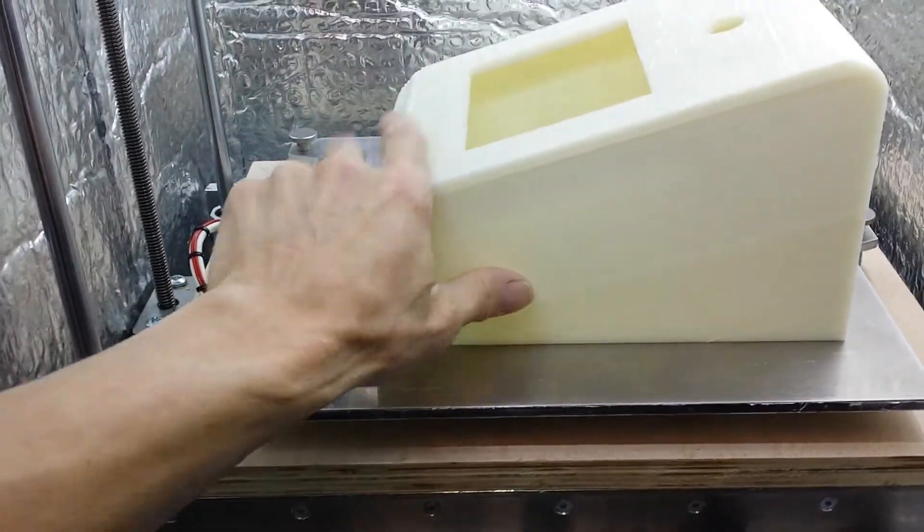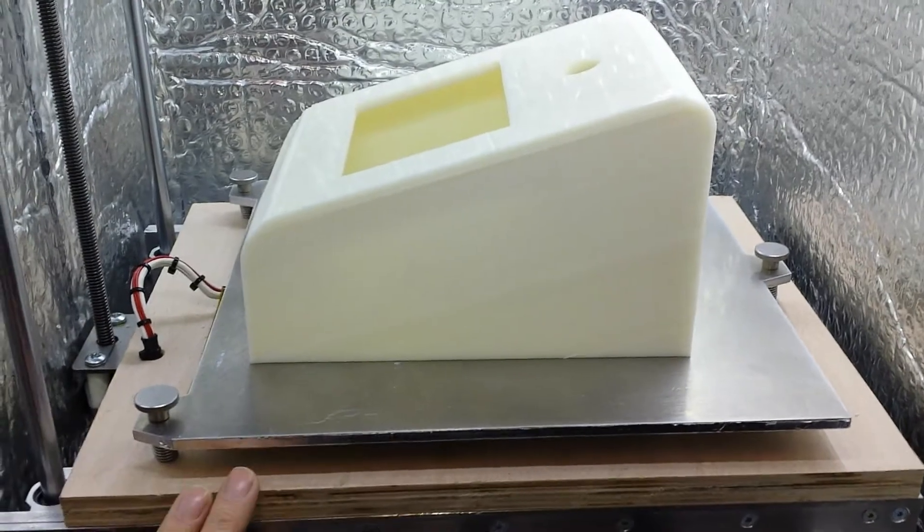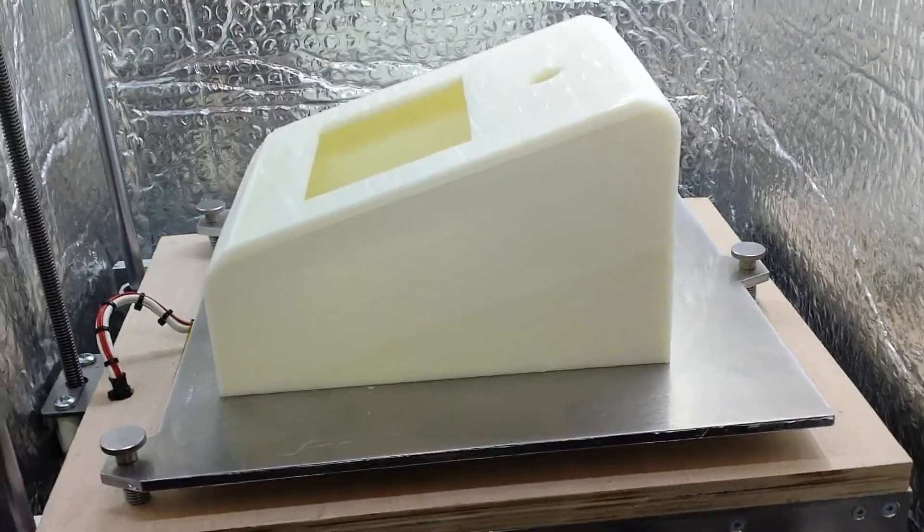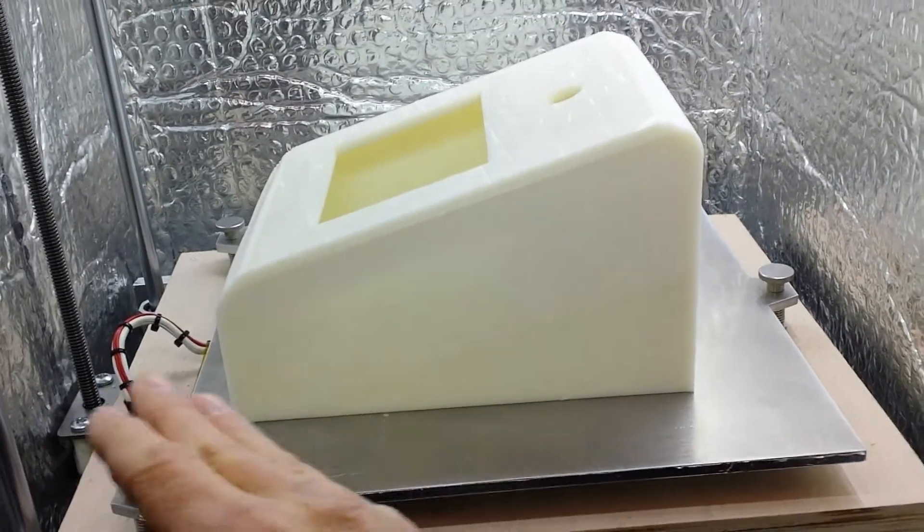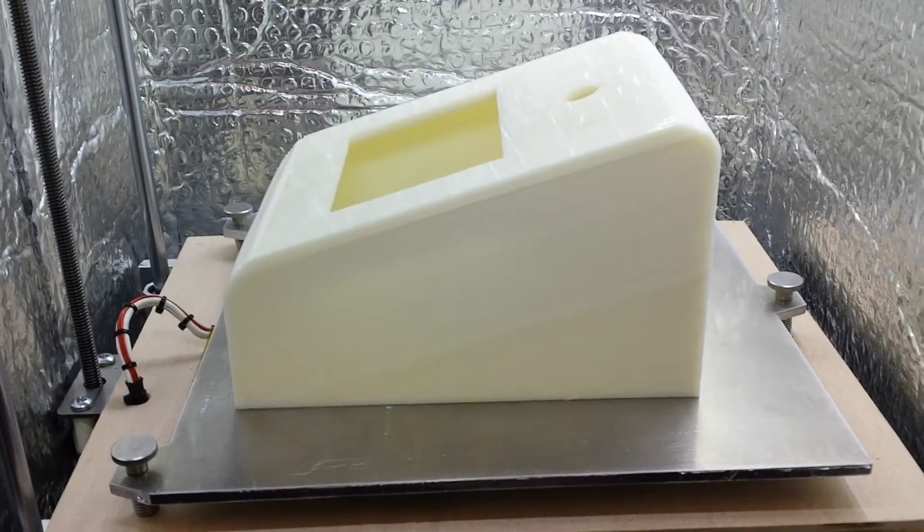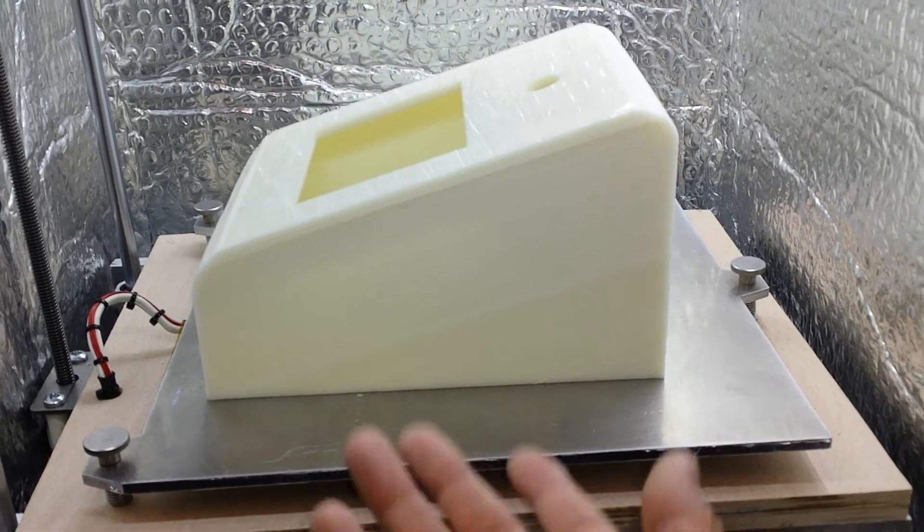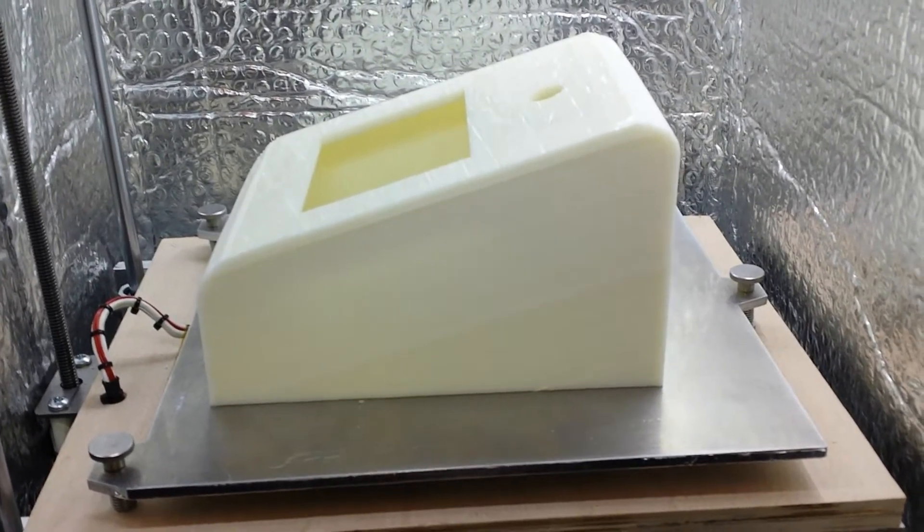Whereas if something goes wrong with this now, I've just got to lift this off, take the insulation off, replace the thermistors and put it back. It'll take me half an hour at most. Whereas if you mill slots and bury it all in there properly and use the adhesive backing on the silicon heater, if anything goes wrong, trying to get that off...